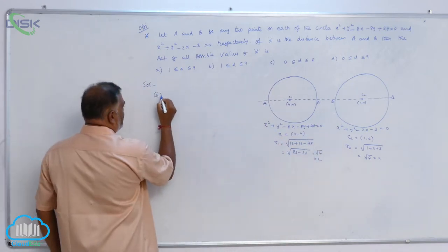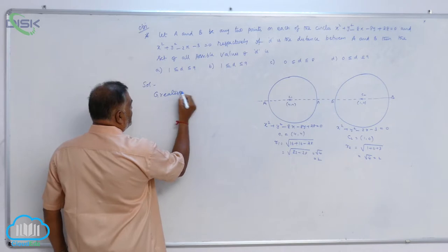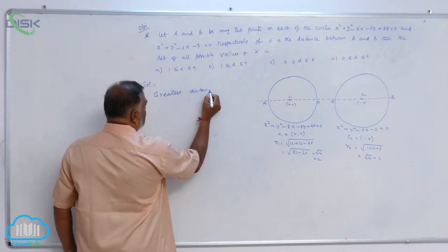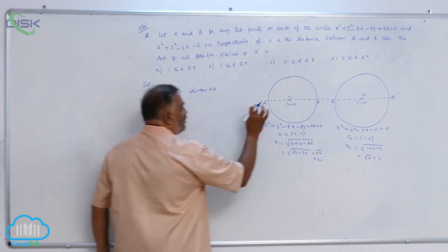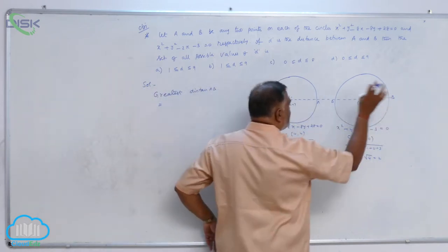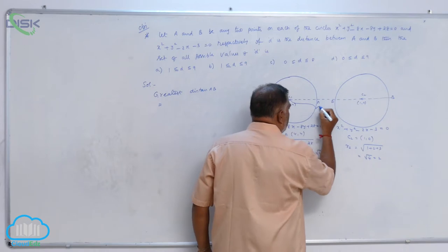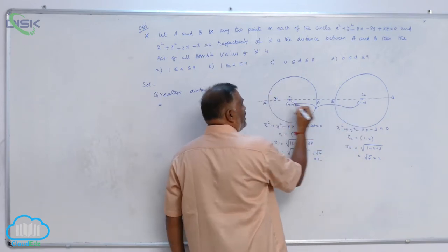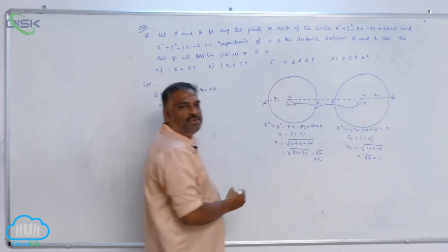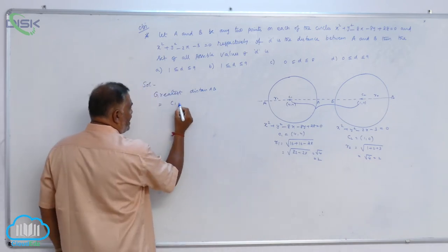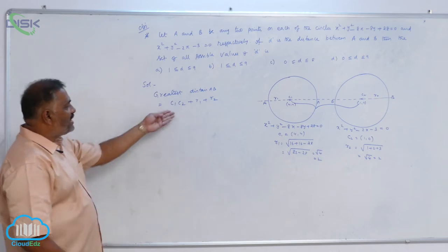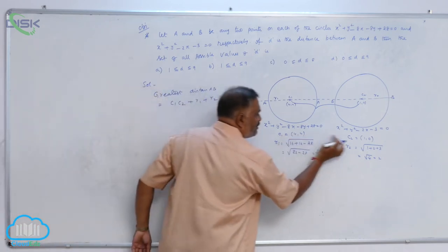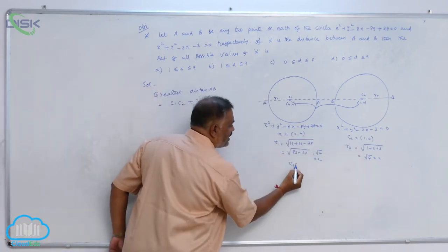So the greatest distance between A and B is given by—you can observe, from here to here—this is nothing but the distance between C₁C₂ plus R₁ plus R₂. What does C₁C₂ mean? The distance between these two center points. Let us calculate it.